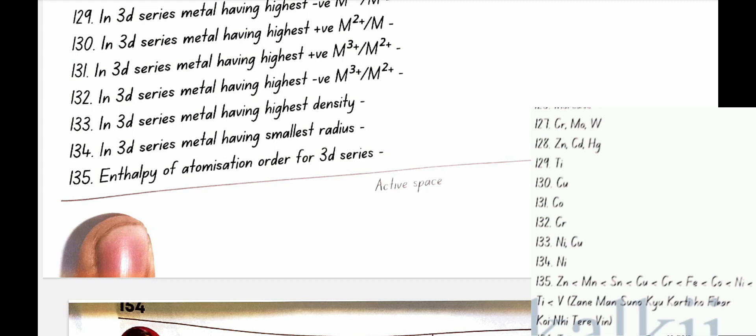Enthalpy of atomization order for 3d series: the increasing order for enthalpy of atomization is Zn Mn Sc Cu Cr Fe Co Ni Ti V. You can find a mnemonic for this in the solutions. So now diagrams.